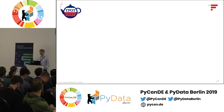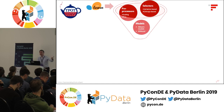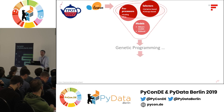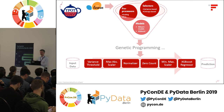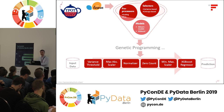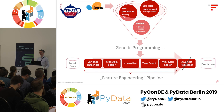TPOT takes ingredients from the scikit-learn API — preprocessors, selectors, and models, plus an XGBoost model — and uses genetic programming to find an optimal scikit-learn pipeline that combines these ingredients, going straight from input data to a prediction. Since we're interested in feature extraction specifically, one approach is to take that optimal pipeline found by TPOT and remove the model at the end, leaving you with a feature engineering pipeline learned by TPOT.